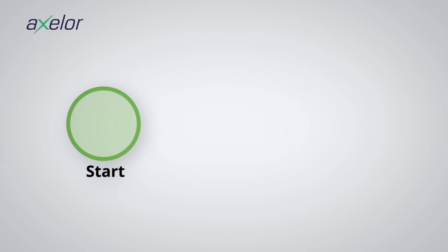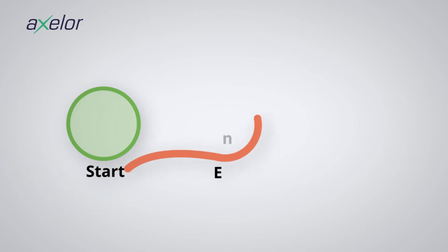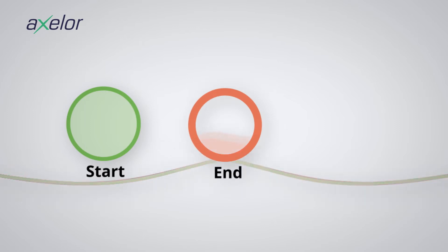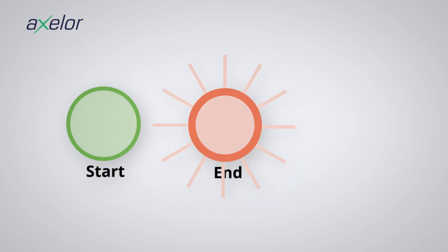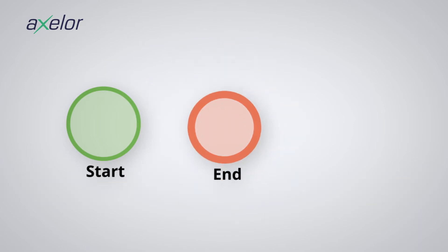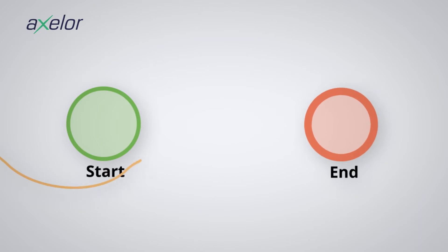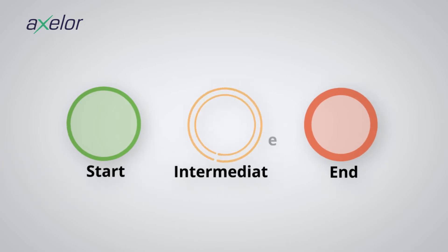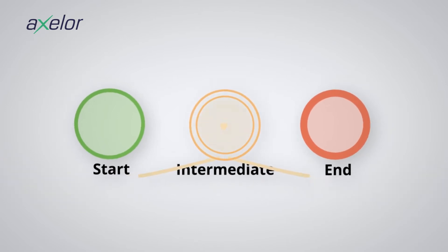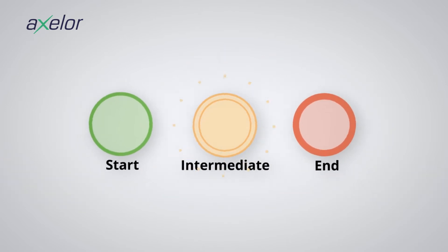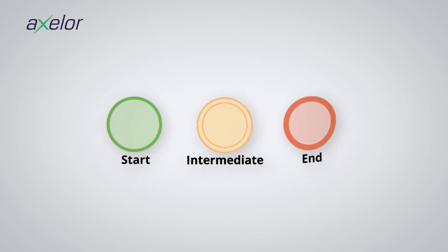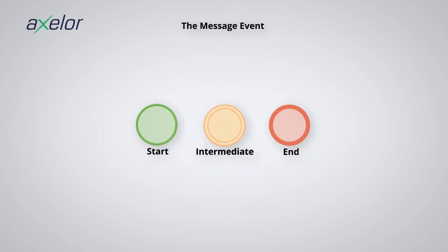The end events are characterized by a thick outline. This event is identified in red in the videos. Intermediate events are identified by a double thin contour and in yellow for their representation in our videos.